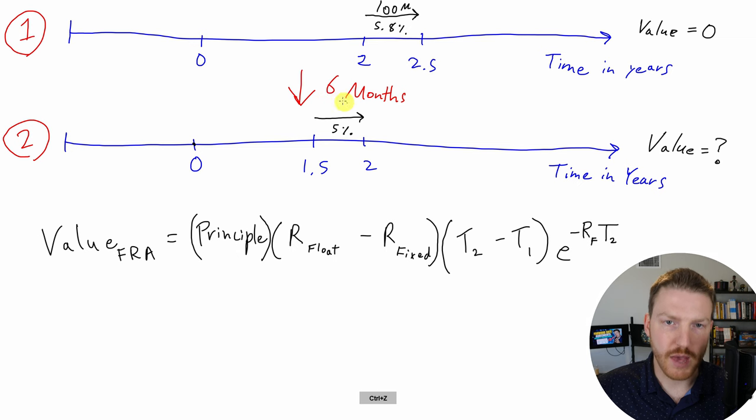Now, six months have actually passed into the future. And now we're in this scenario too. And this is today. And what was two years from now, six months ago is now only a year and a half from now. And what was two and a half years from now, six months ago is now only two years from now. And we can see that this forward rate associated with this time period is now 5%. So we locked it in at 5.8%, but it went down to 5%. What's the value of our forward rate agreement.